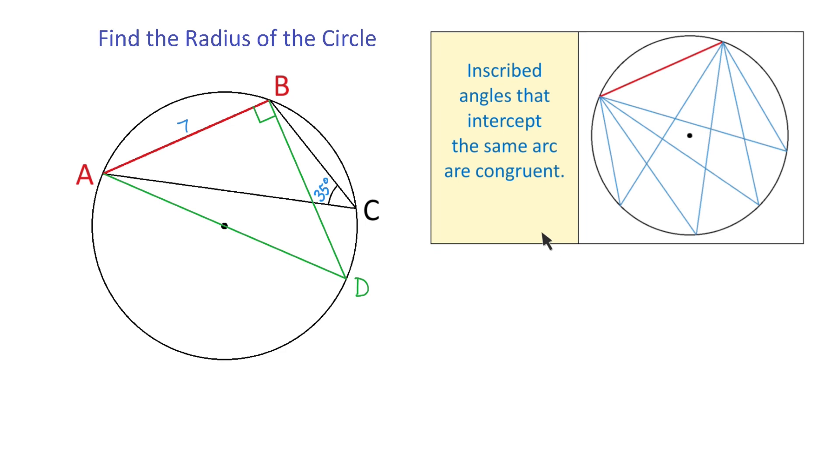And inscribed angles that intercept the same arc are congruent. In this circle, all these angles are congruent because they intercept the same arc.